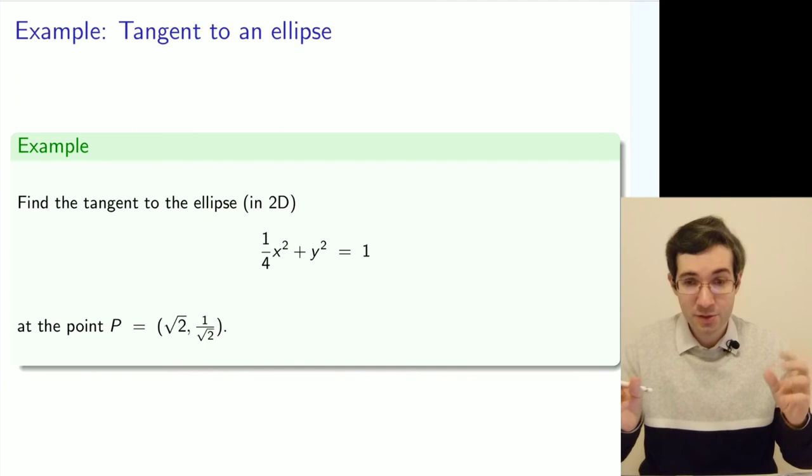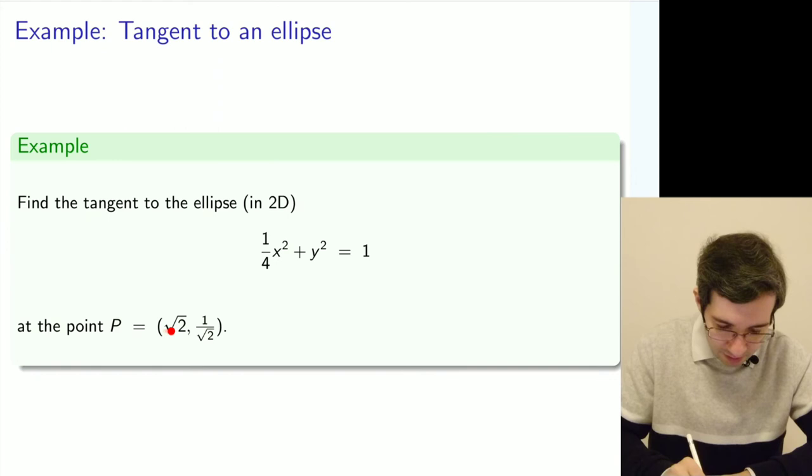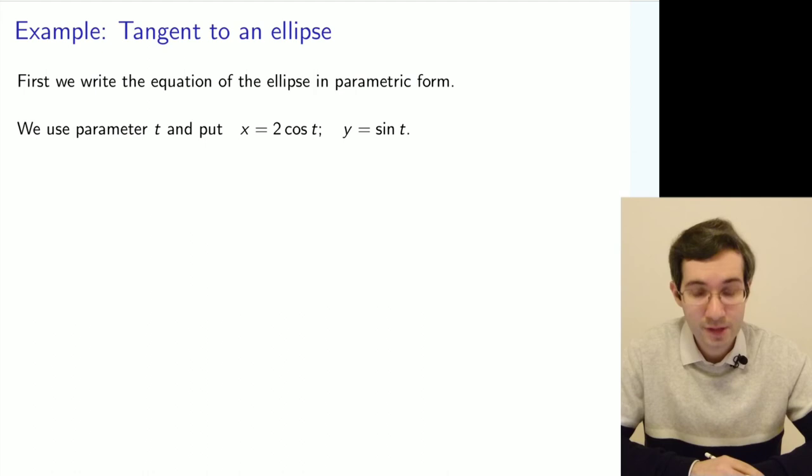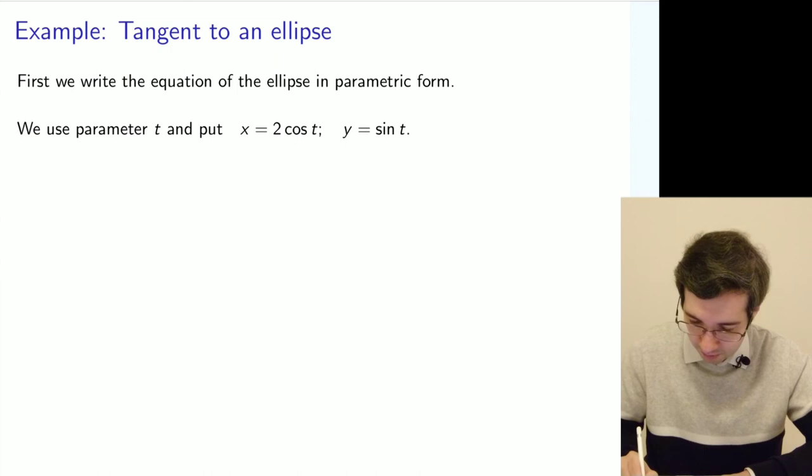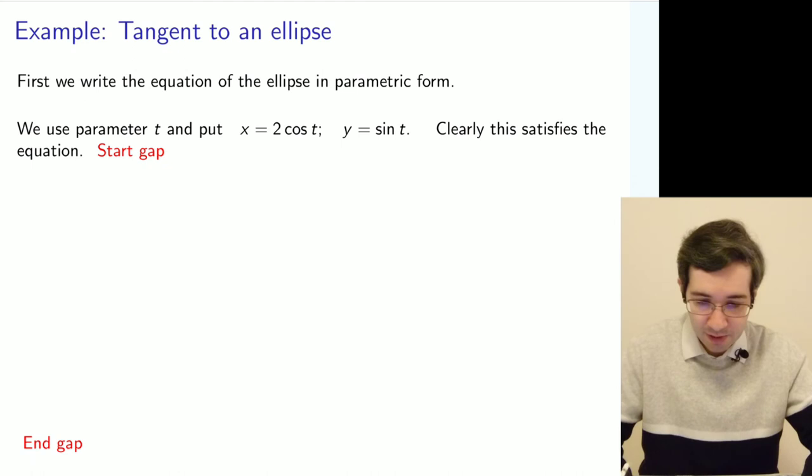Let's look for the tangent to the ellipse. Ellipse means that you have a different principal axis, so they're not equal diameters. But not just tangent anywhere, but tangent in the position given by point P. To do it, we use equation of the ellipse in a parametric form. We define parameter t and write x as 2 cosine and y as sine. Very similar to the circle, but just note these two. We can check that this satisfies this equation.